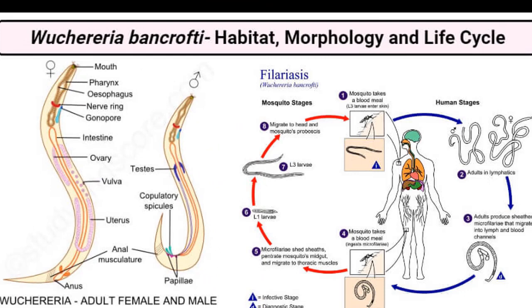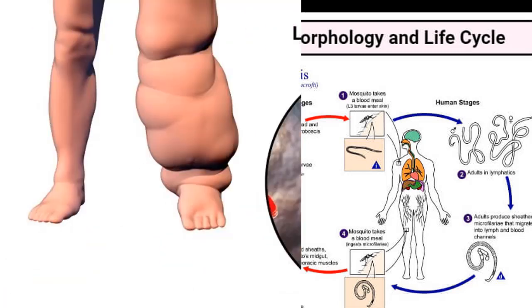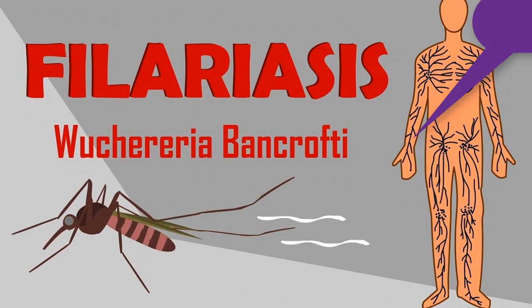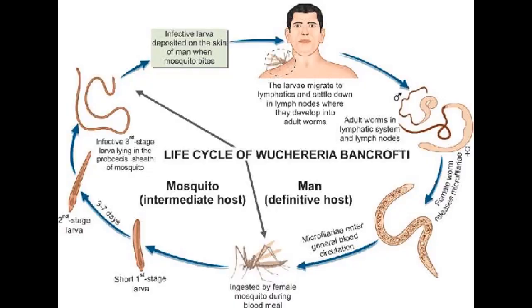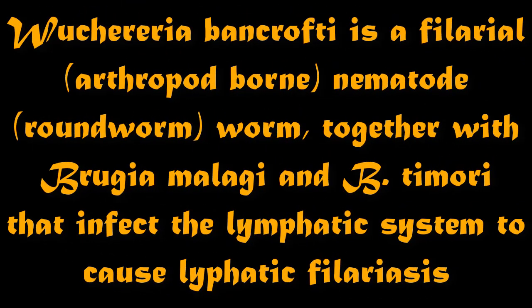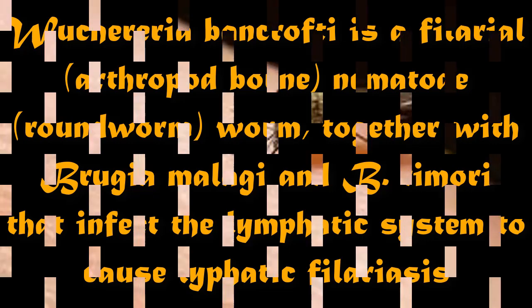Habitat. W. bancrofti is a filarial worm found in the lymph nodes of humans, causing a lymphatic filariasis called Bancroft's filariasis. Humans are the only known natural definitive host. Mode of transmission: most of the infections worldwide are caused by W. bancrofti. In Asia, the disease can also be caused by Brugia malayi and Brugia timori. The infection spreads from person to person by mosquito bites.